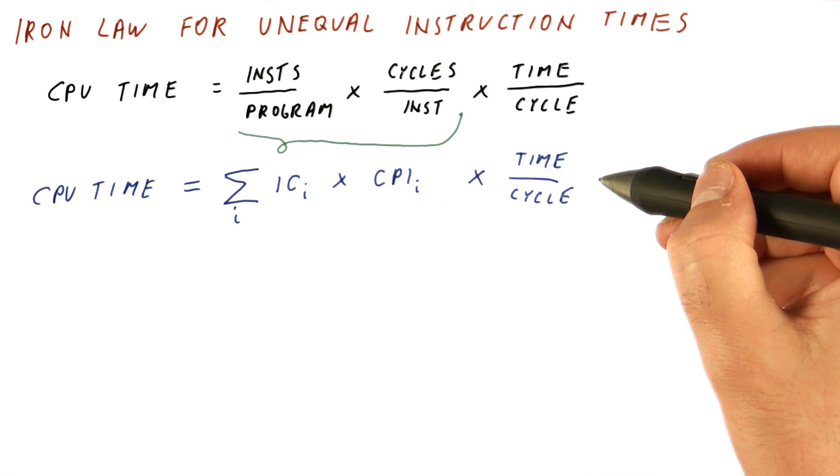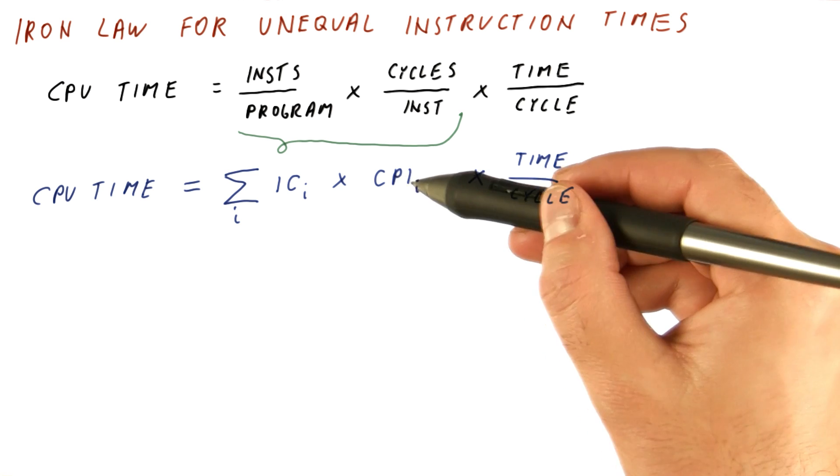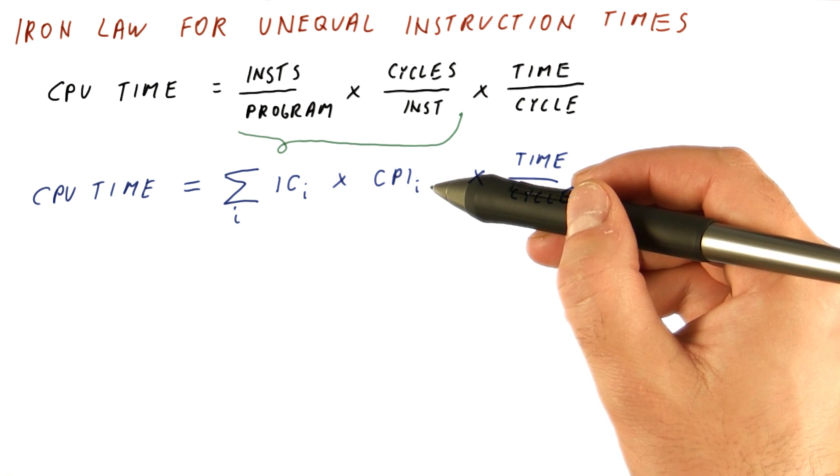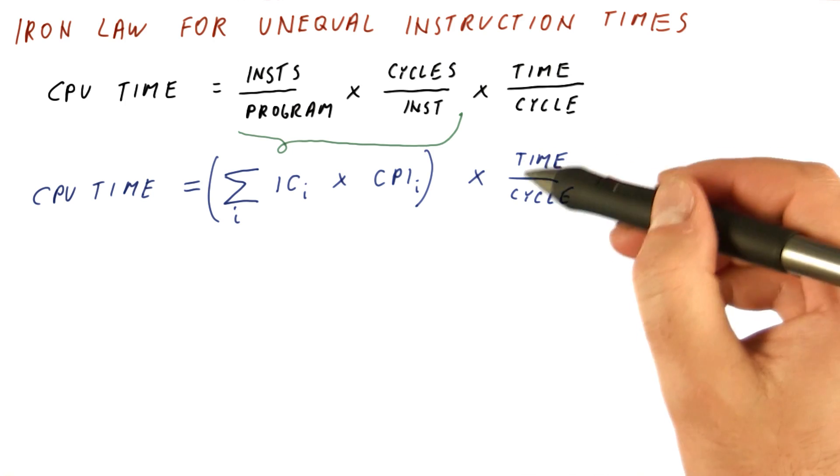So the new CPU time here is like this. So if we have different CPI, meaning different cycles per instruction for different types of instructions, then we need to do this and just multiply that with the clock cycle time.